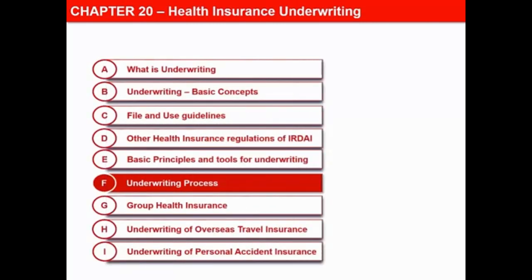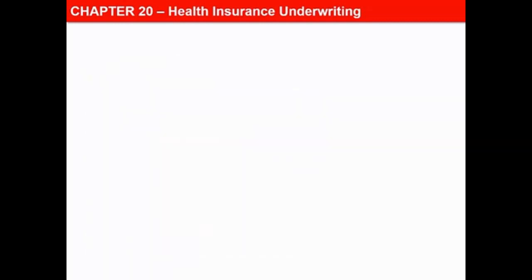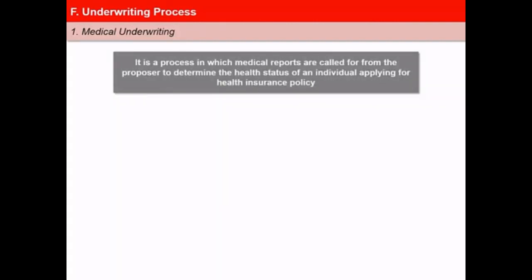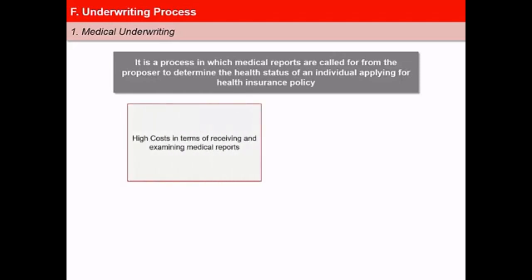In this next video of the lesson, Health Insurance Underwriting, we will learn about the underwriting process. Medical underwriting is a process in which medical reports are called for from the proposer to determine the health status of an individual applying for a health insurance policy. The health information collected is then evaluated by the insurers to determine whether to offer coverage or not, and if yes, then up to what limit and on what conditions and exclusions. However, medical underwriting involves high costs in terms of receiving and examining medical reports. Also, when insurers use a high degree of medical underwriting, they are blamed for cream skimming, i.e. accepting only the best kind of risk and denying others.